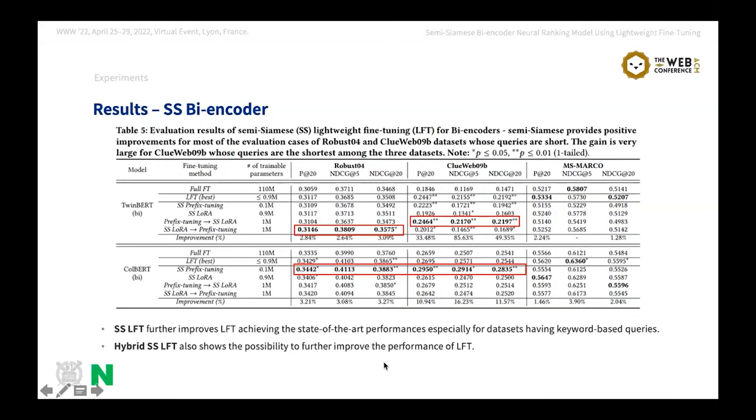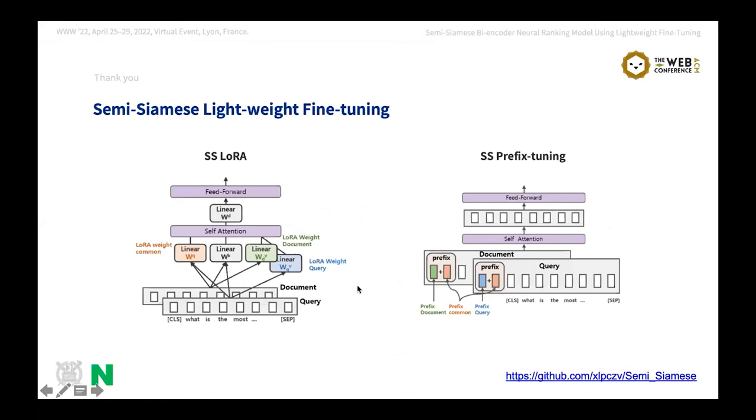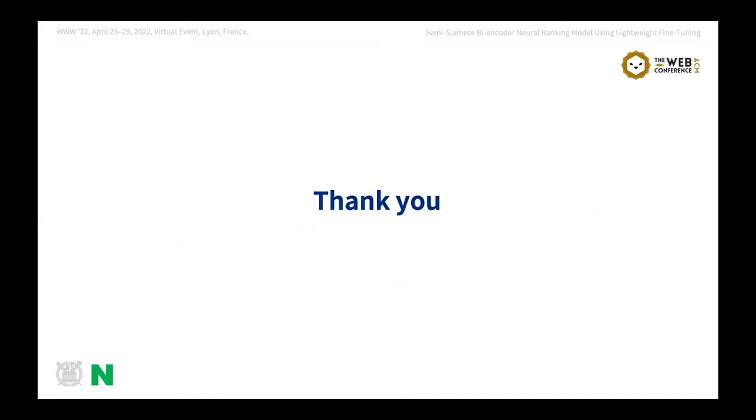Finally, we show the results of semi-Siamese LFT methods applied on the bi-encoder neural ranking models. Semi-Siamese LFT further improves Siamese LFTs, achieving state-of-the-art performance, especially for datasets having keyword-based queries. Hybrid semi-Siamese LFT also shows the possibility to improve the performance of LFT. Until now, I have introduced our semi-Siamese bi-encoder neural ranking models using lightweight fine-tuning like Lora and prefix tuning. These pictures illustrate our methods, and if you want, you can implement our methods using the GitHub repository here.